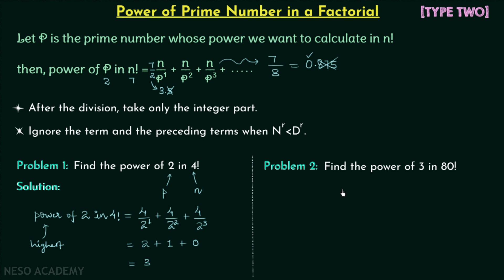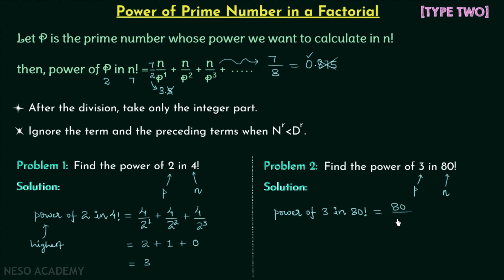Moving on to problem number 2: find the highest power of 3 in 80 factorial. The prime number is 3 and n equals 80. We compute: 80÷3¹, plus 80÷3², where 3² equals 9 which is less than 80, plus 80÷3³, where 3³ equals 27, still less than 80, plus 80÷3⁴, where 3⁴ equals 81, which is larger than 80. So we stop at this term.